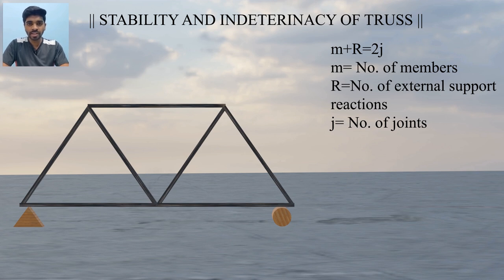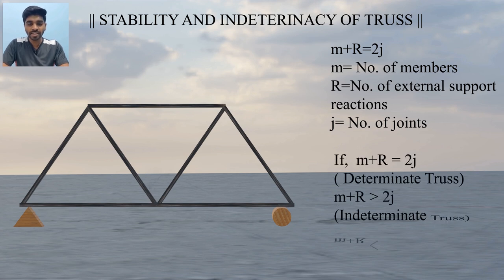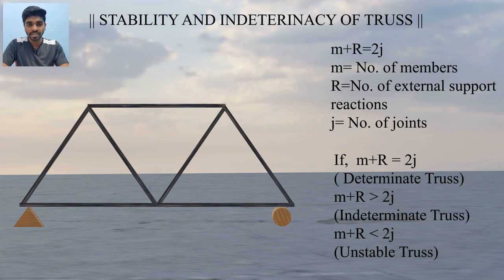In this equation, if m + r is greater than 2j, the structure is indeterminate. If m + r is less than 2j, the structure is unstable. However, there is an important concept: even if a structure is determinate or indeterminate, it might still be unstable.